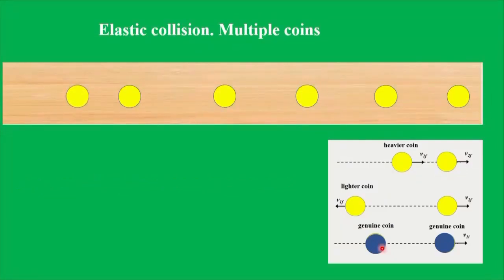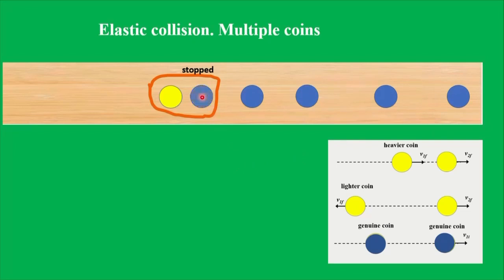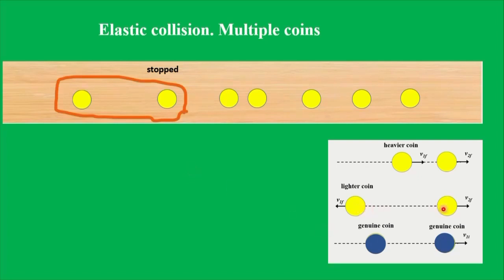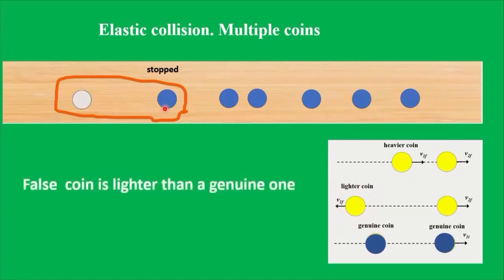In the next case, after collision these two coins moved in the same direction, so the false coin is one of them. All others are genuine coins. Because this coin stopped, it is also a genuine one. Applying this situation to our case, we see that the false coin is heavier than the genuine one. In the following situation, these two coins after collision moved in opposite directions, so the false coin is among them. All others are genuine coins, including the stopped coin. The false coin rebounded, so it is lighter than the genuine one.